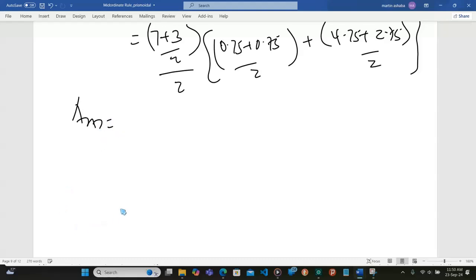So AM is going to be, if I get 0.75 plus 4.75, this is what I'm going to get: 0.75 here, 4.75. If I add this, that would be 5.